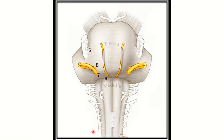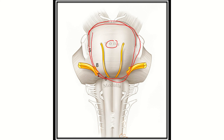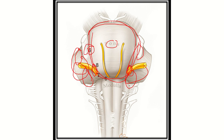Looking at the figure, we can see the pons in this area. The pons is connected with the cerebellum by the cerebellar peduncle, visible on both sides. In this region we can see two nerves located at the cerebellopontine angle.